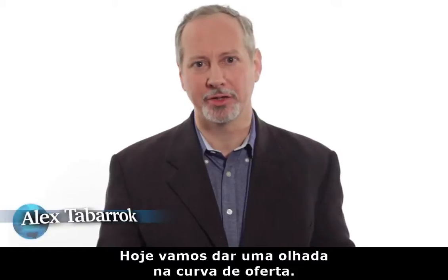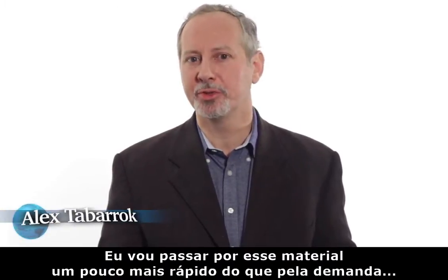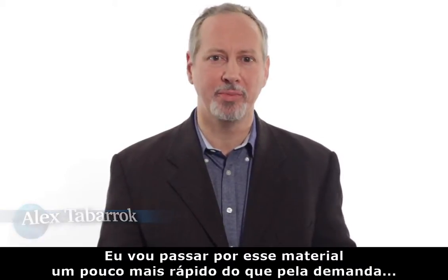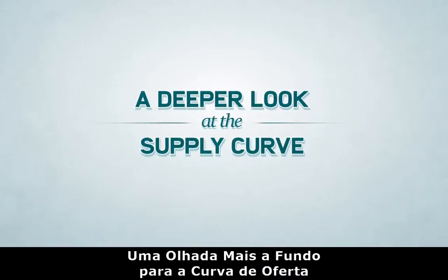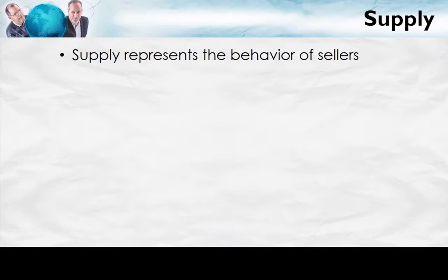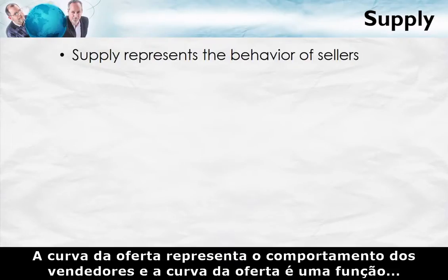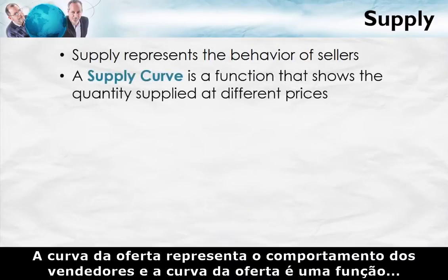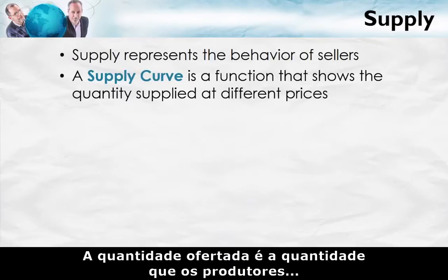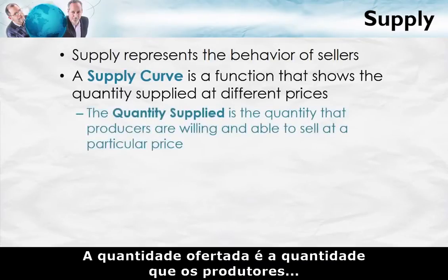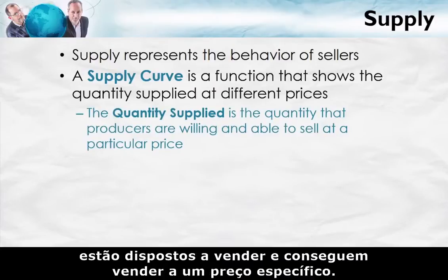Today we turn to look at the supply curve. I'm going to move through this material a little bit more quickly than through demand, because many of the ideas are similar. The supply curve represents the behavior of sellers, and a supply curve is a function that shows the quantity supplied at different prices. The quantity supplied is the quantity that producers are willing and able to sell at a particular price.